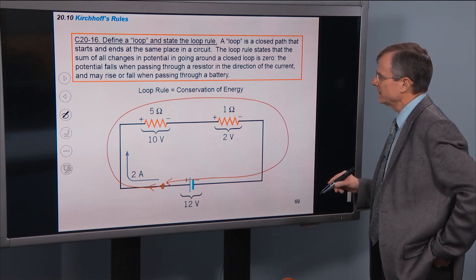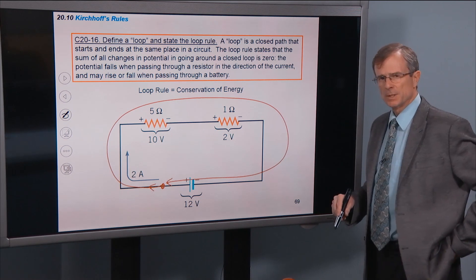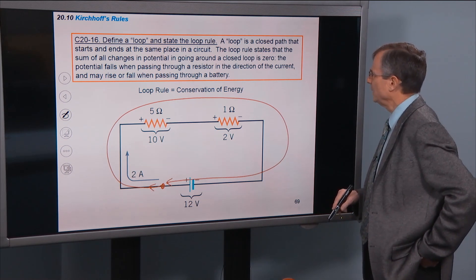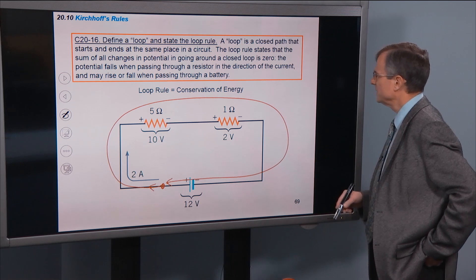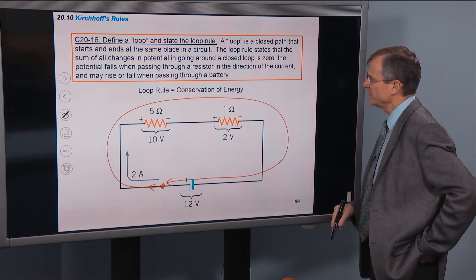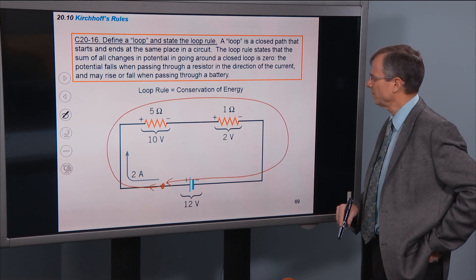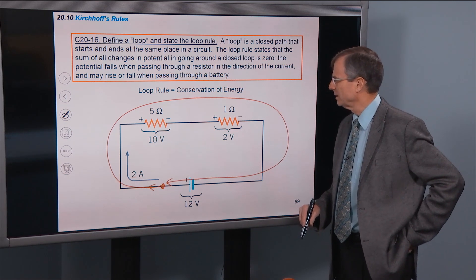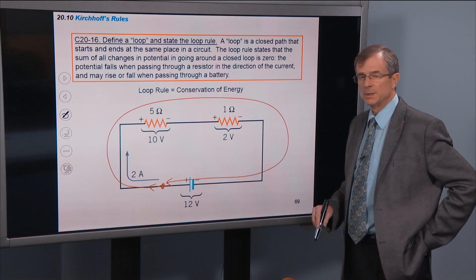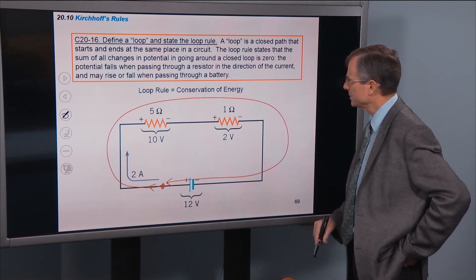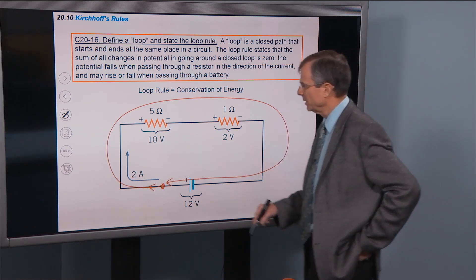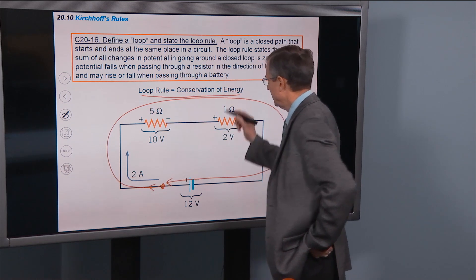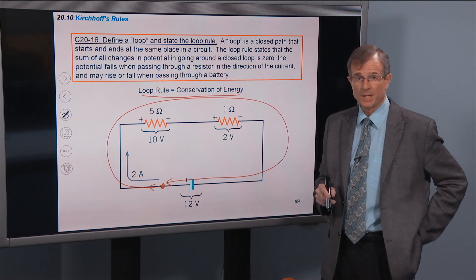Closed path that starts and ends at the same place. The loop rule states that the sum of all changes in the potential in going around a closed loop is zero. The potential falls when passing through a resistor in the direction of the current and may rise or fall when passing through the battery. Let's apply the loop rule to this circuit. The loop rule is, by the way, a statement of conservation of energy.